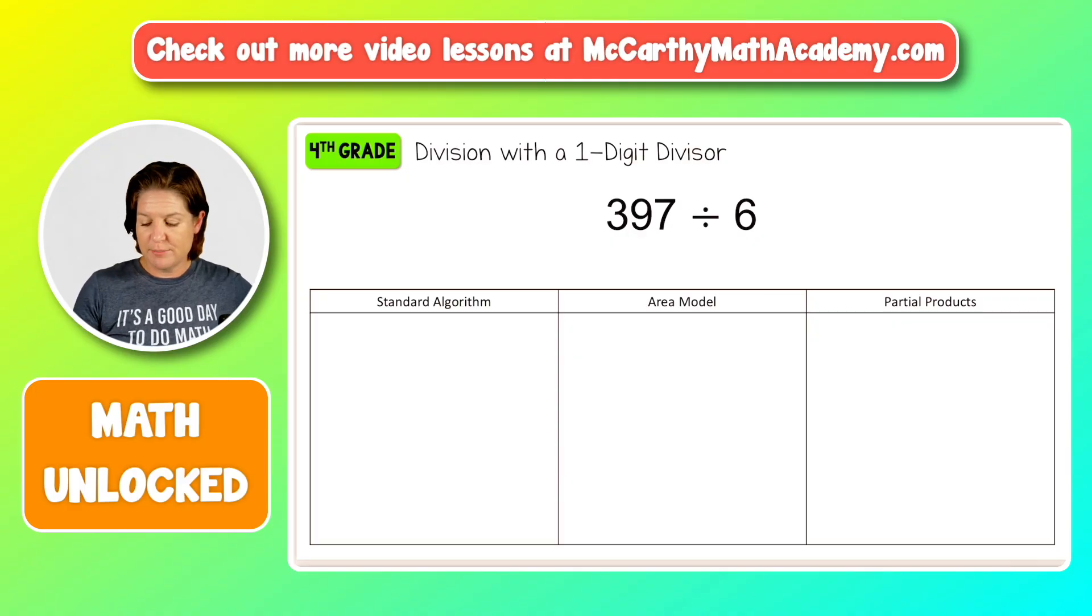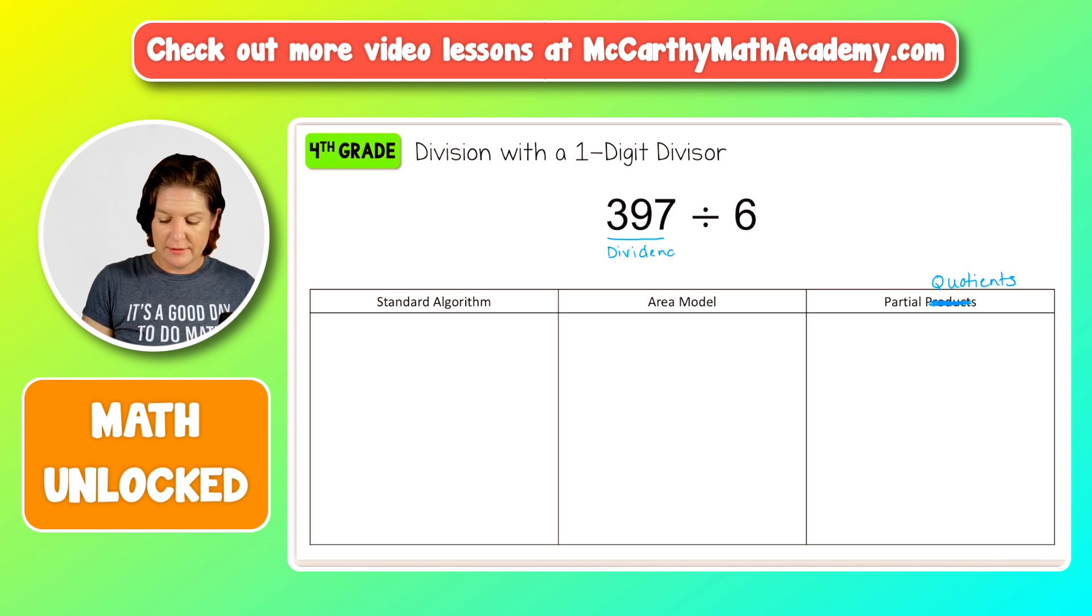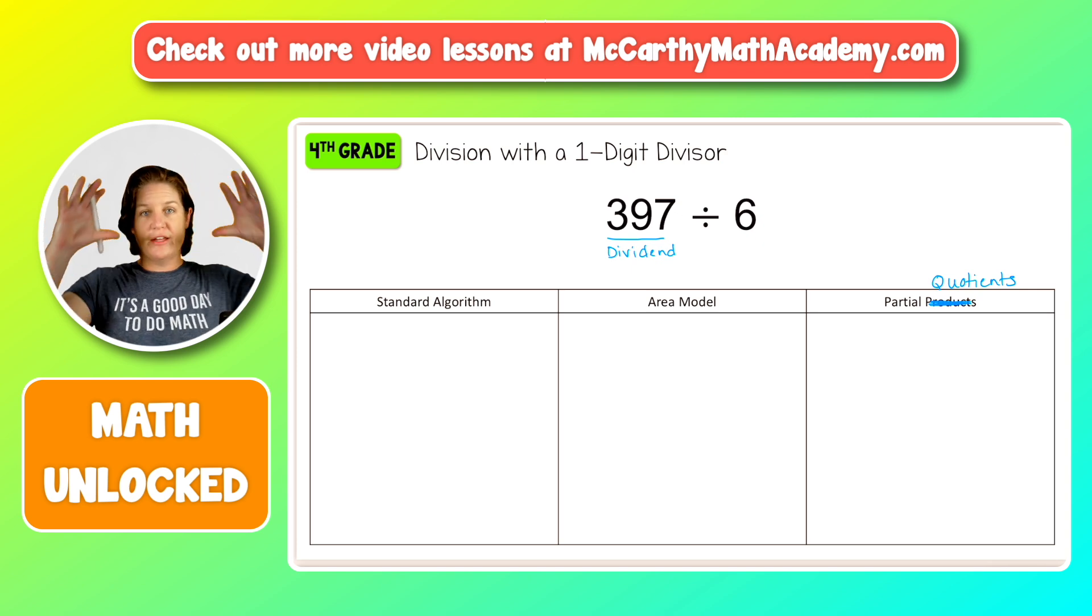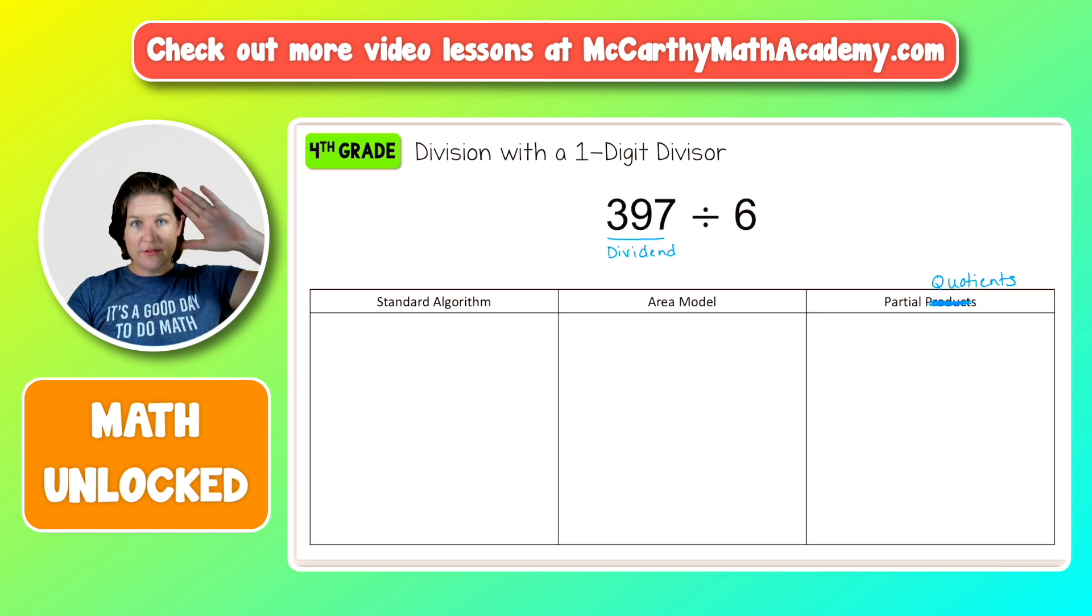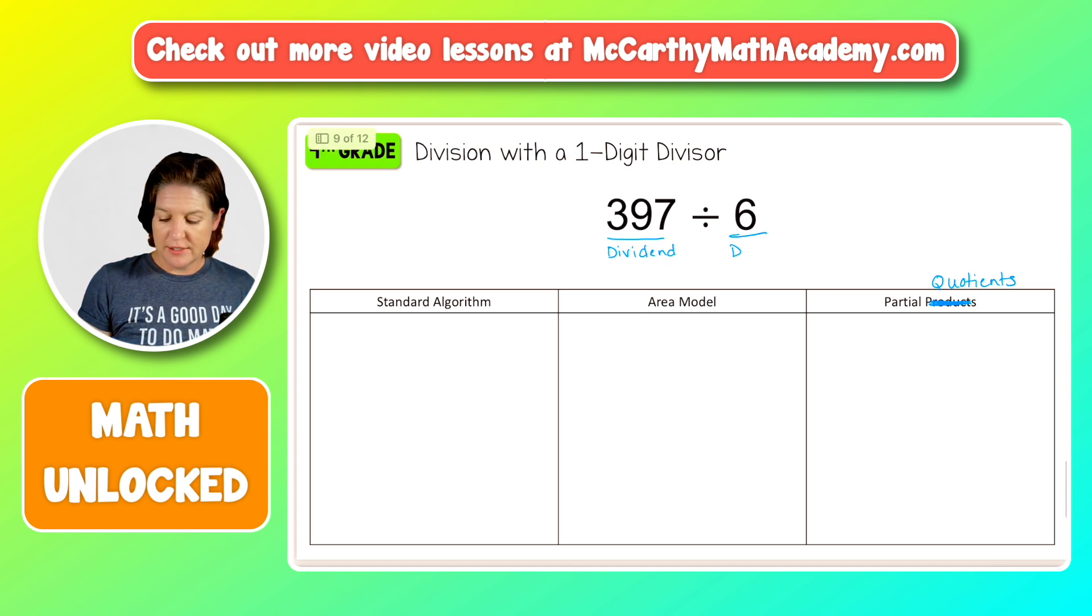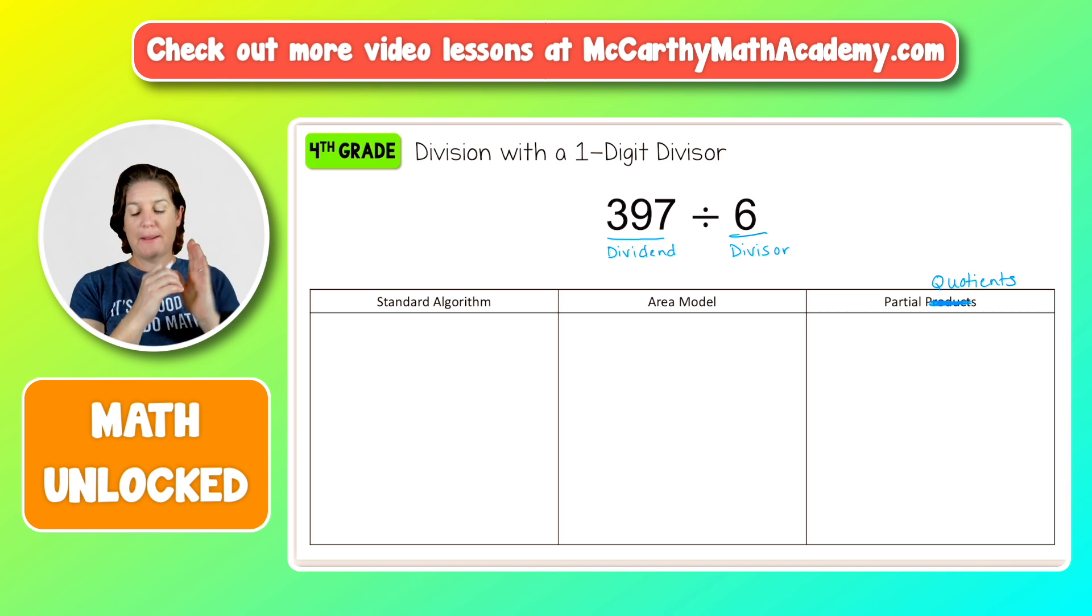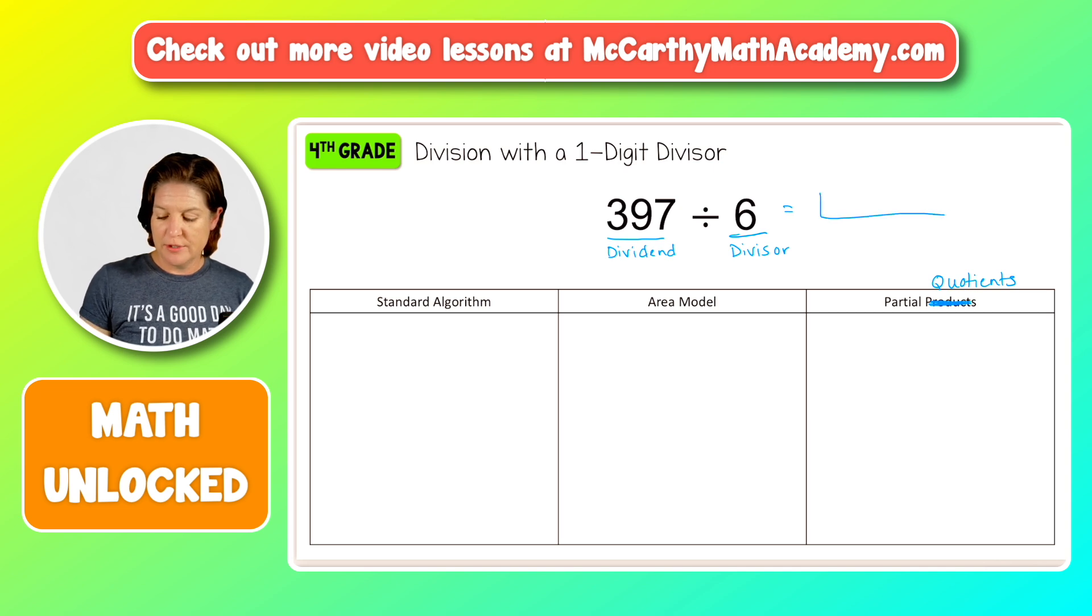First things first, I caught a typo over here. This will be the partial quotients method. All right, so you can see here we have 397 divided by six. This right here is called our dividend. Okay, that is like the total that we are going to be dividing and the divisor comes next. This is how many groups we're dividing by into groups of six and what we're trying to figure out is the answer which has a fancy name. It's called the quotient.